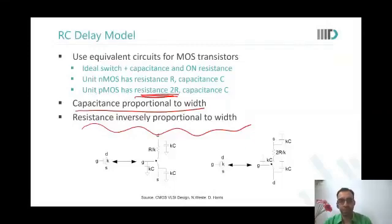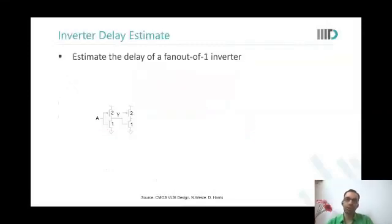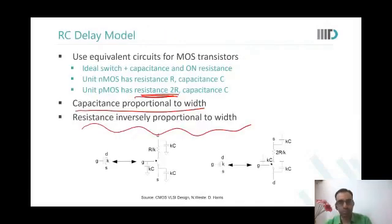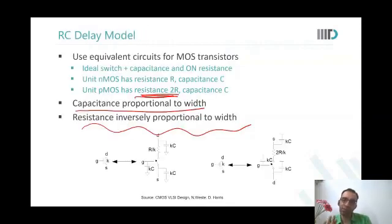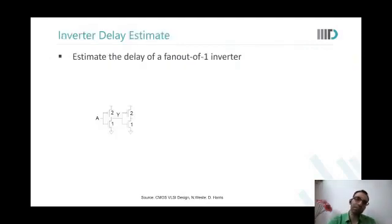T-MOS is twice. And we have this factor of 2 because we need to maintain the same beta ratio. We assumed that mobility of the holes is 1 by half the mobility of the electrons. That is why 2R. Now, to get same delays, same rise and fall delays, you make an inverter with the ratio 2 is to 1. So that T-MOS and N-MOS both have same delay.